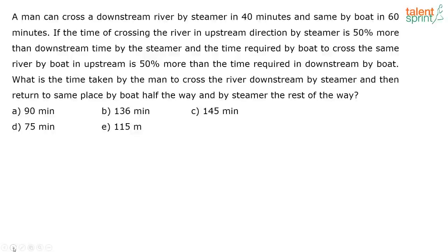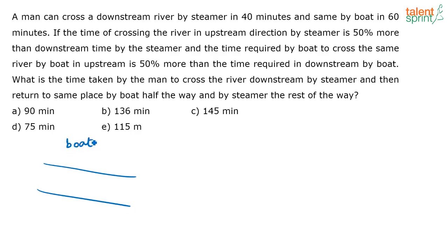A man can cross a downstream river by steamer in 40 minutes and the same by boat in 60 minutes. So there is a stream, and there are two cases: the man is travelling by a boat or the man is travelling by a steamer.